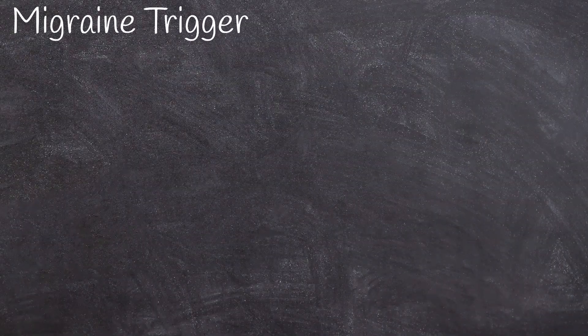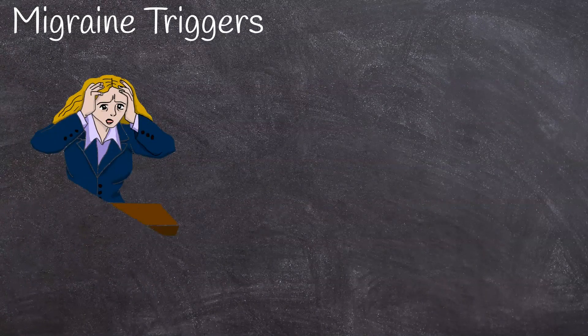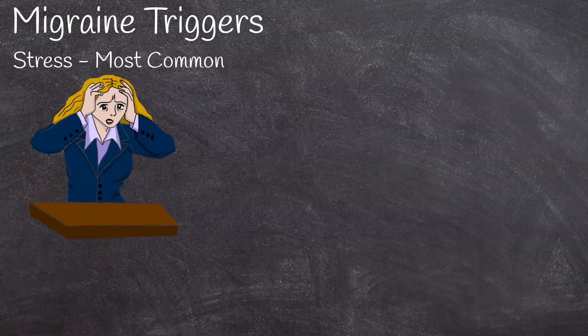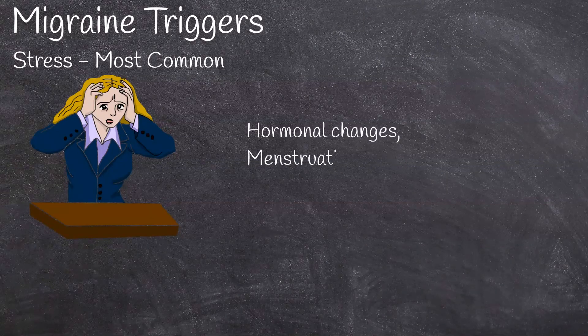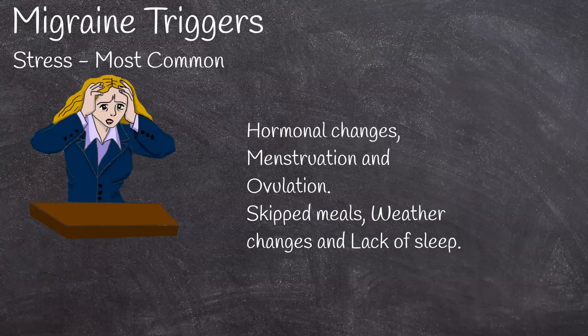Migraine attacks are commonly triggered by environmental factors. In almost 80% of cases, triggers are present before a migraine attack. Triggers can be almost any activity, but the most common and proven ones are stress, hormonal changes such as menstruation and ovulation, skipping meals, weather changes, and lack of sleep.